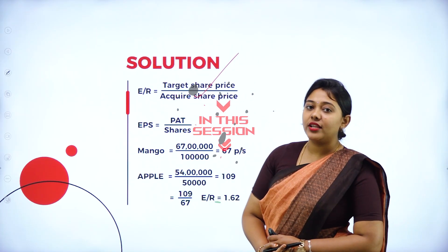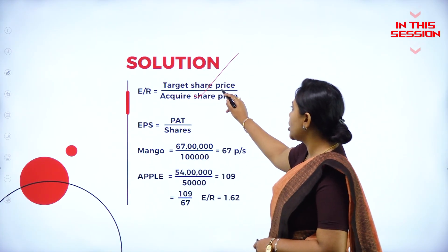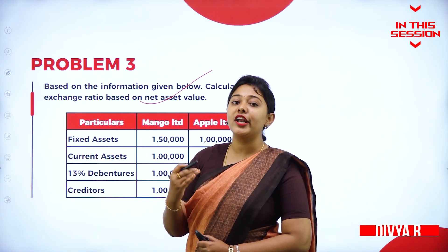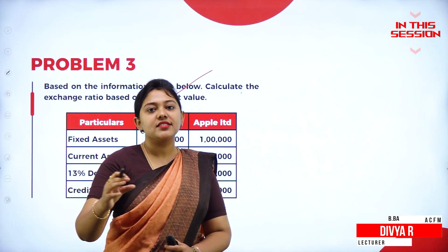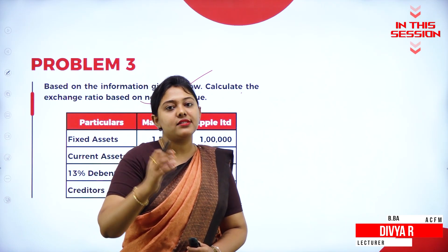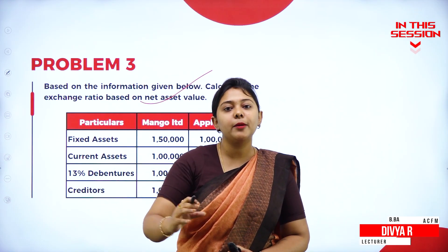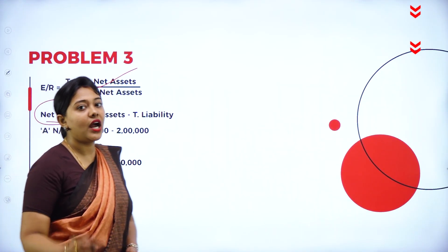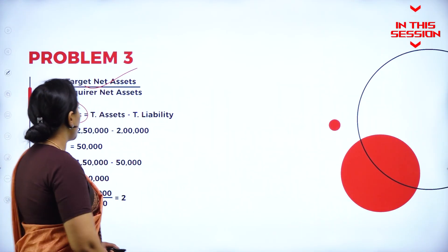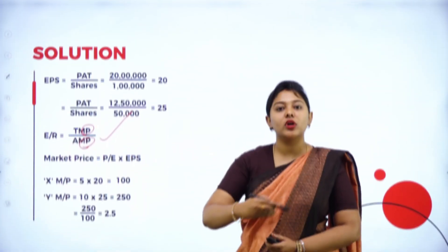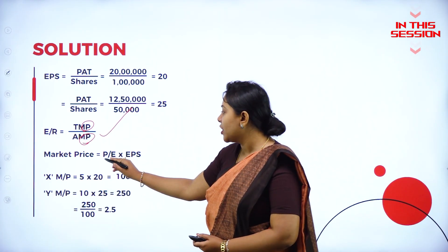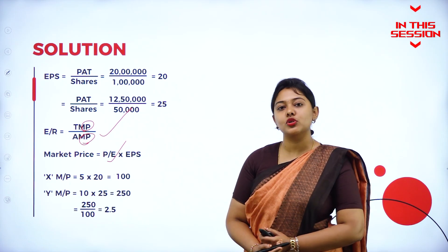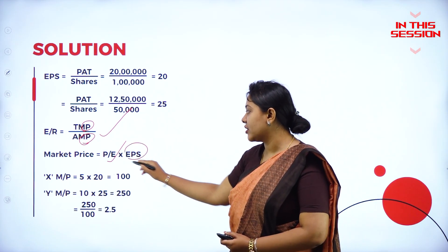What is the formula for exchange ratio? Target share price divided by acquirer share price. There is a separate formula for net assets calculation, EPS calculation, and market price calculation. To calculate net assets, the formula is total assets minus total liabilities. For market price, the formula is price-to-earnings ratio multiplied by EPS. The price-to-earnings ratio is given in the question, but EPS is not given.